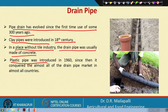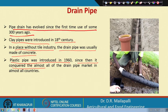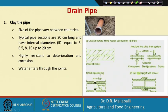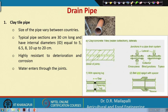Plastic pipes were introduced in 1960, and since then they have conquered almost all of the drain pipe market because of their lower cost, greater durability, and light weight, and they are now used in almost all countries. The types of drain pipes include clay tiles, concrete pipes, and plastic pipes.